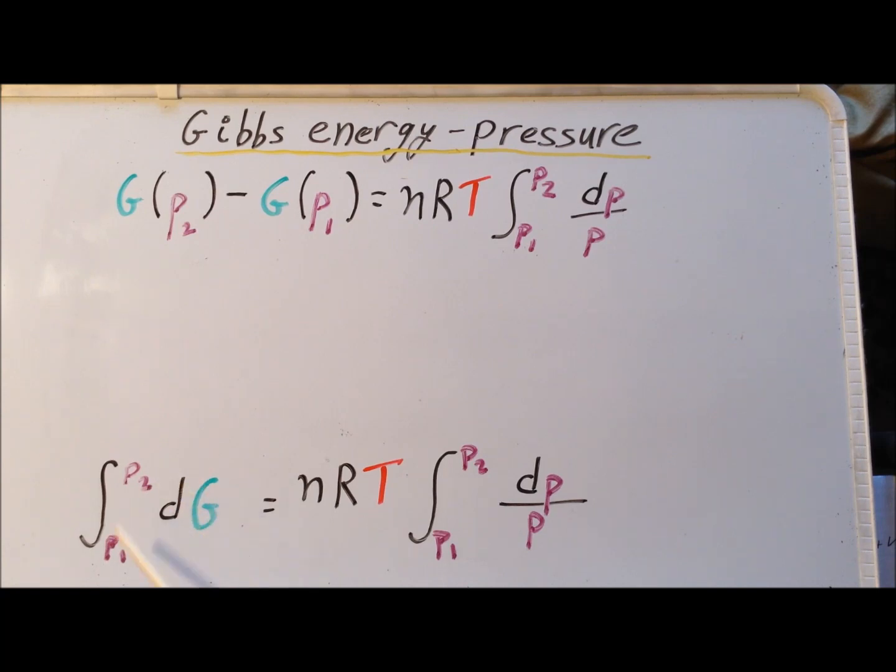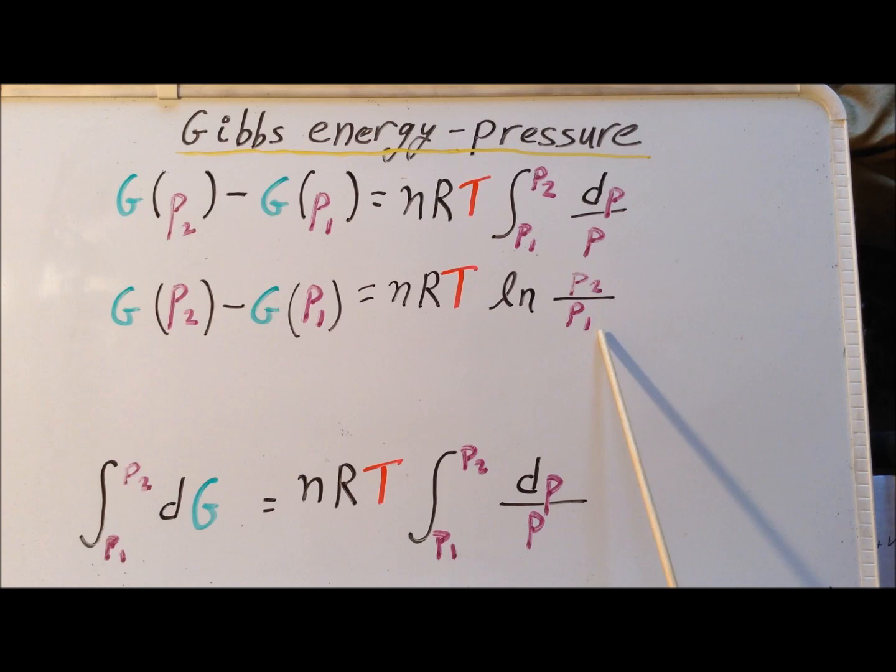The anti-derivative of dG here is just simply G. So we have G at P2 minus G of P1 for the left-hand side. All we have left to evaluate is the right-hand side. And we notice that we have the integral of dP over P. Since the integral of dP over P is the natural log of P, the right-hand side now becomes nRT times the natural log of P2 divided by P1.